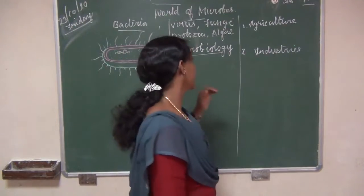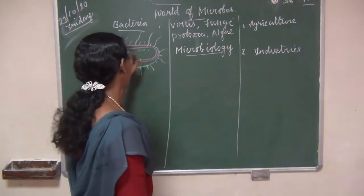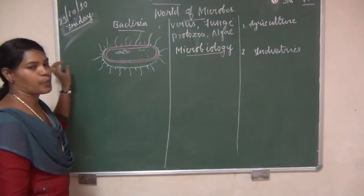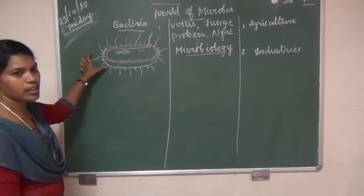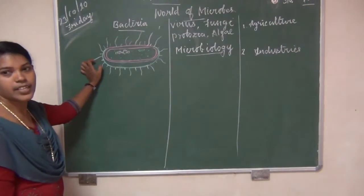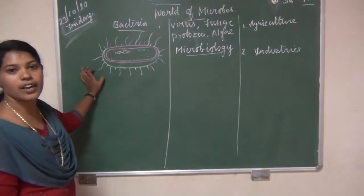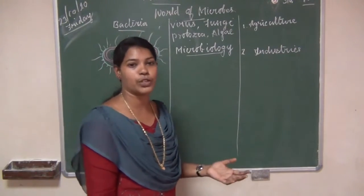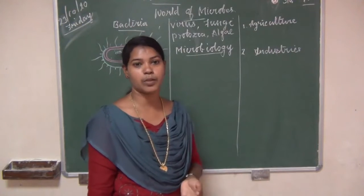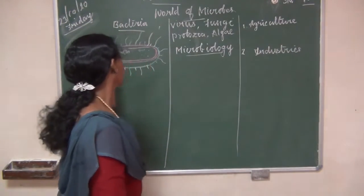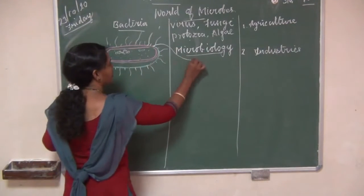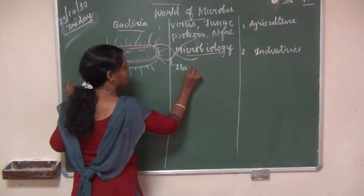Let us begin with details about bacteria. Bacteria are unicellular, microscopic, and prokaryotic organisms. They do not have a nucleus and cellular organelles. They are motile or non-motile. Motile means moving from one place to another; non-motile means they cannot move. Some special structures called flagella help in movement.